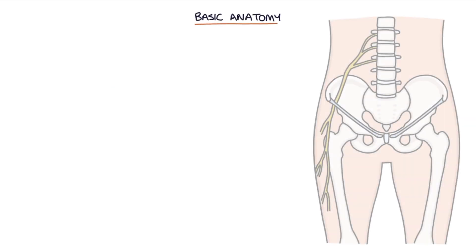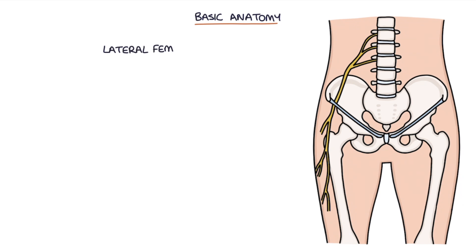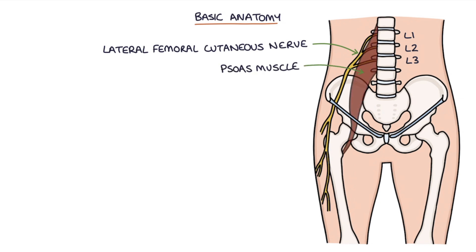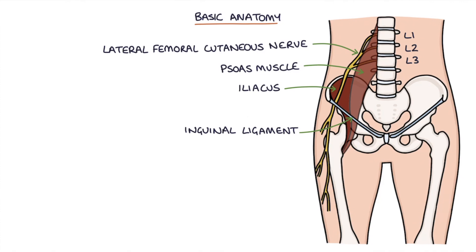Let's start with some basic anatomy. The lateral femoral cutaneous nerve originates from varying combinations of L1, L2, and L3 nerve roots. It comes from behind the psoas muscle, then runs around the surface of the iliacus muscle, then runs under the inguinal ligament onto the thigh, just medial and inferior to the anterior superior iliac spine, or the ASIS.